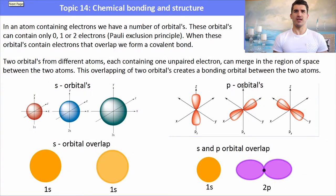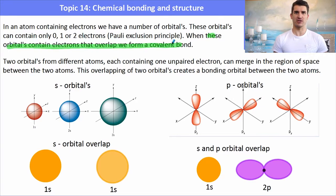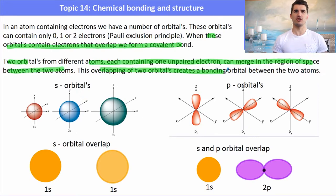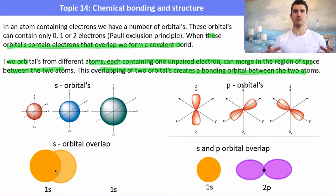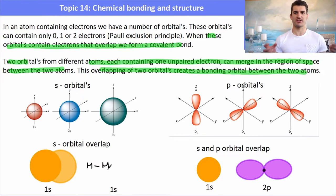Remember the Pauli exclusion principle: an orbital can contain 0, 1, or 2 electrons. Where there is an overlap of two partially filled orbitals, we form a covalent bond. So if we have two orbitals from two different atoms containing one unpaired electron, those things can merge in a region of space, which creates a bonding orbital between the two atoms. So if we get two S orbitals, which look a little bit like tennis balls, and they overlap, we would form what we call a sigma bond. This could be like two hydrogens coming together and overlapping their 1S orbitals.